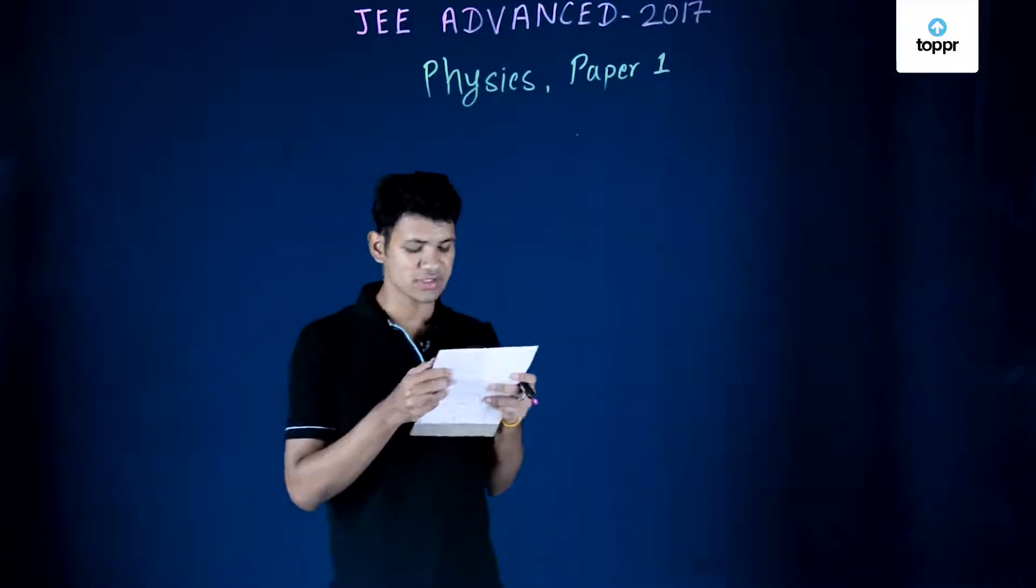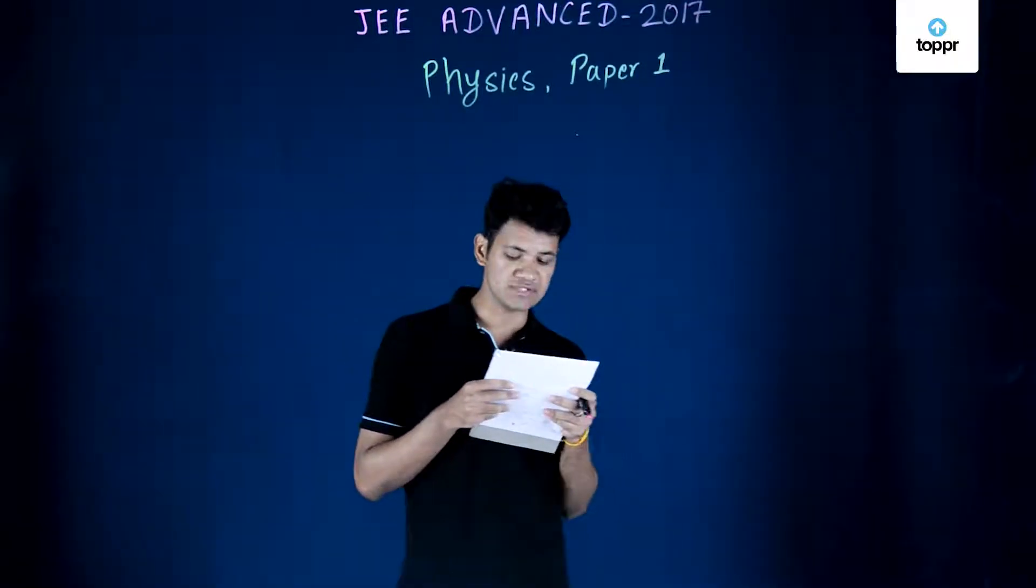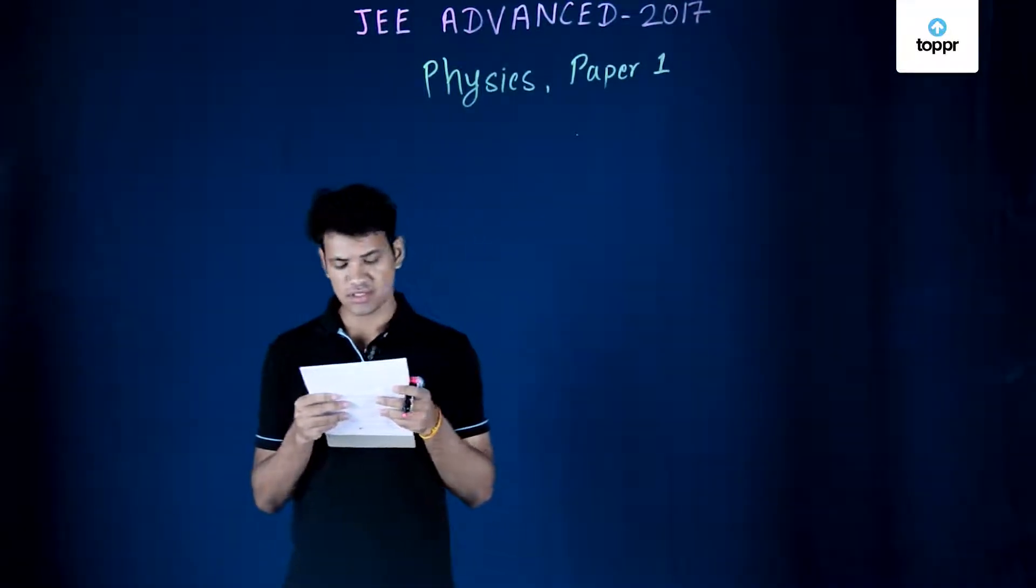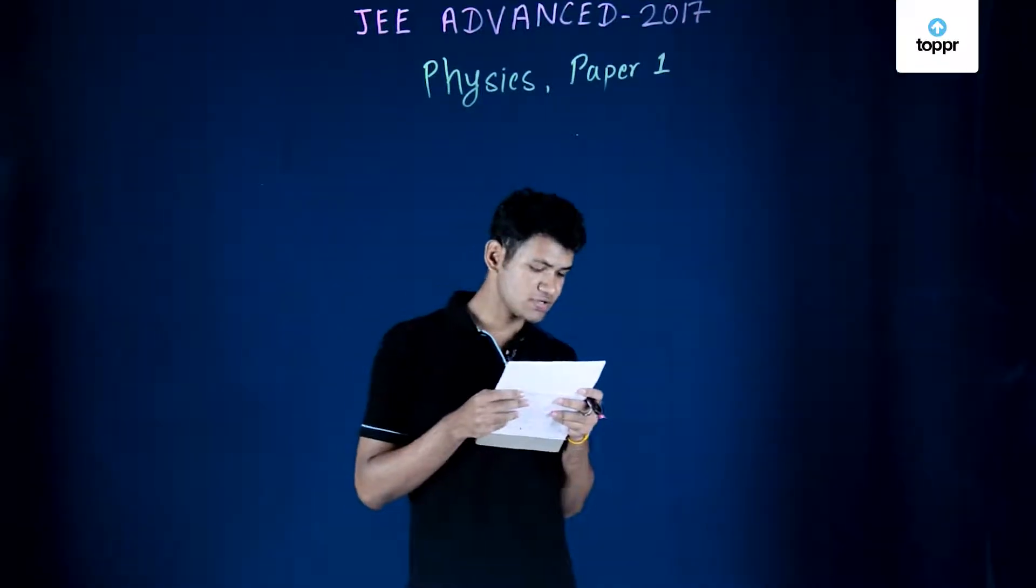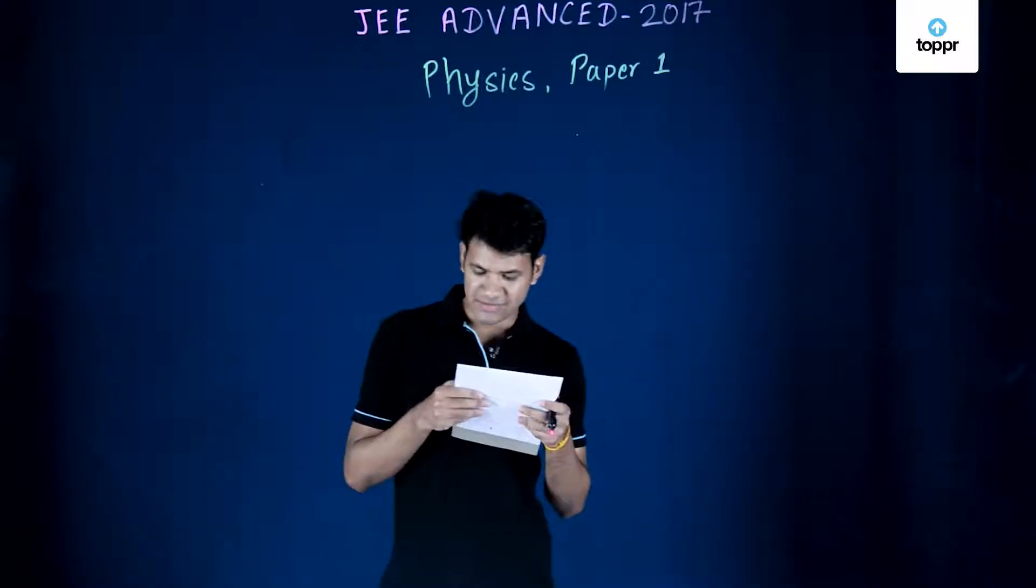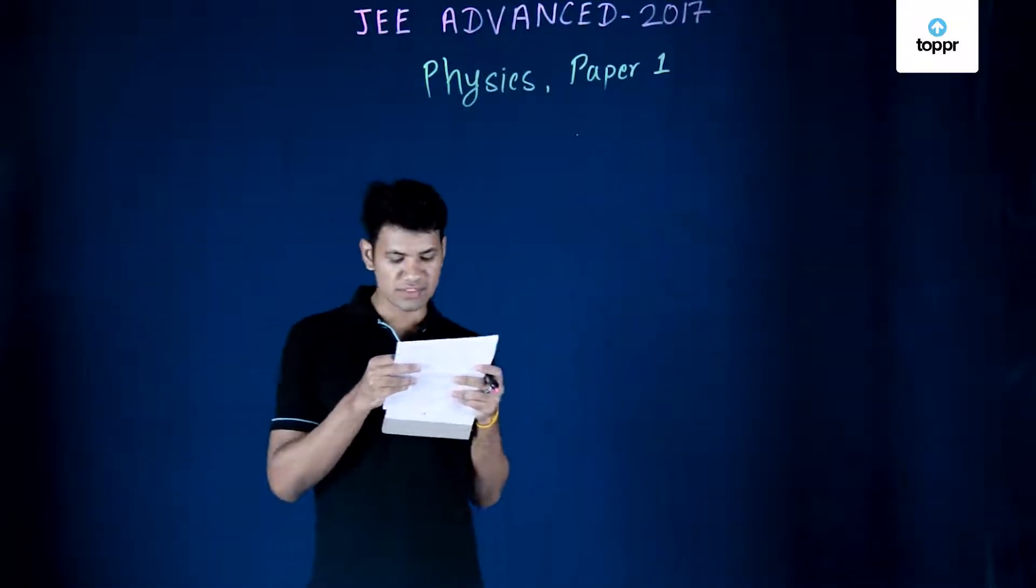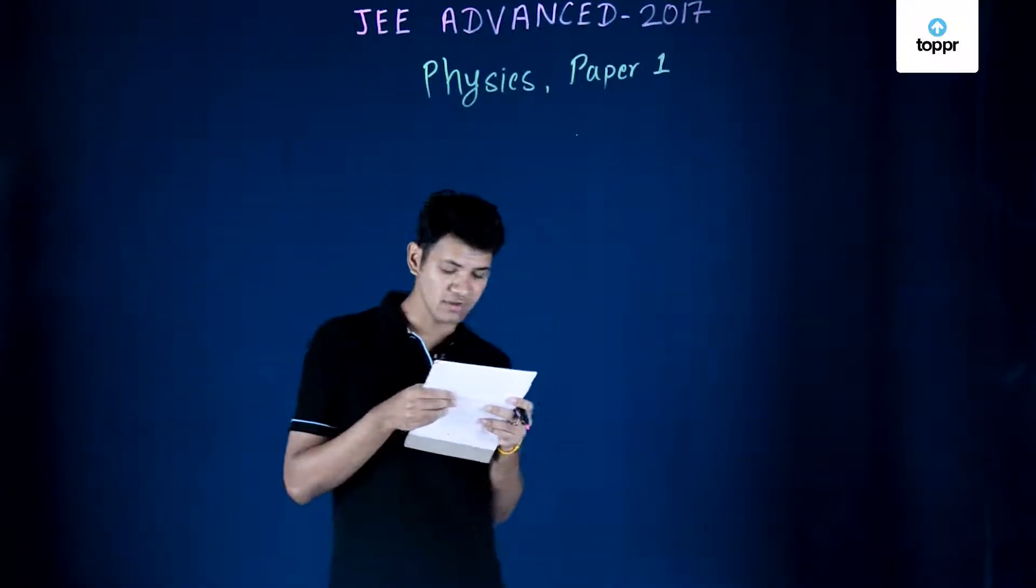I131 is an isotope of iodine that beta decays to an isotope of xenon with a half-life of eight days. A small amount of a serum labeled with I131 is injected into the blood of a person. The activity of the amount of I131 injected was 2.4 × 10^5 becquerel.